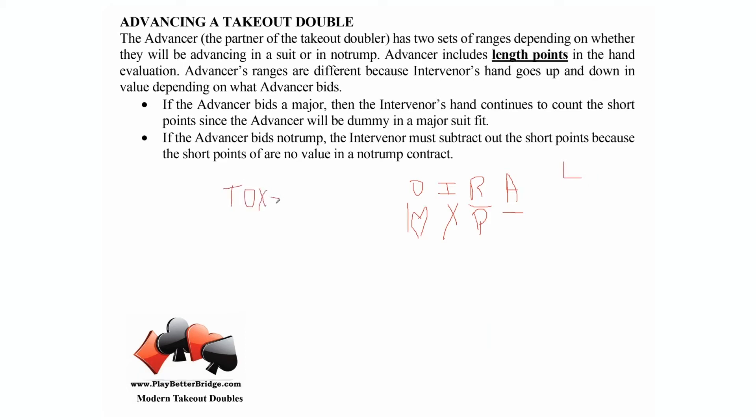Hand evaluation: intervener counts high card points plus short points, and advancer counts high card points plus length points. A big part of this takeout double concept is getting your hand evaluation right.